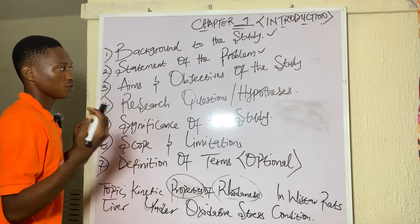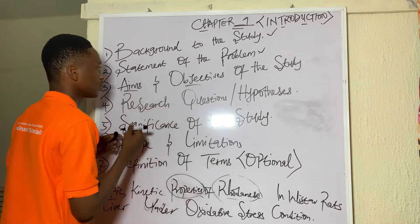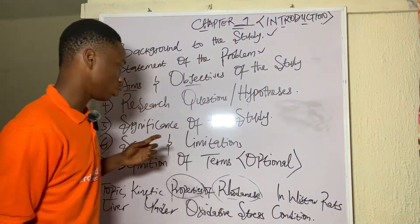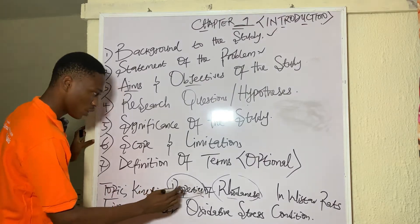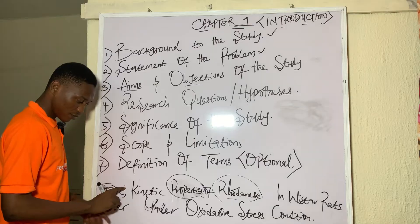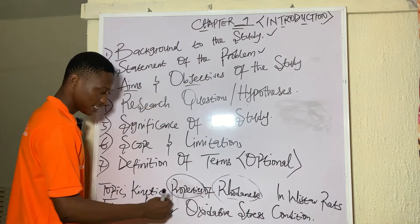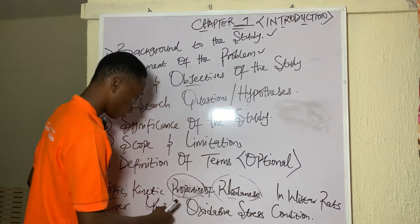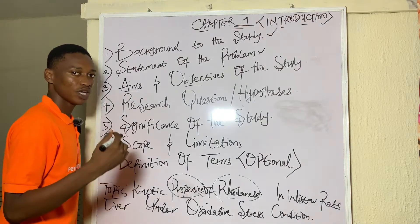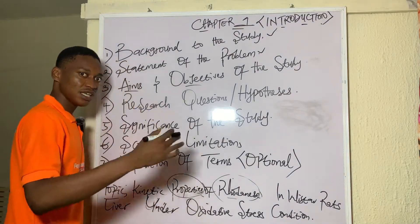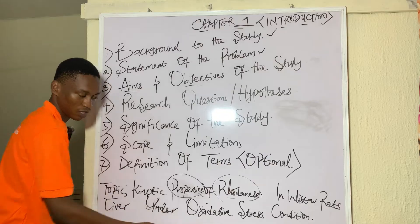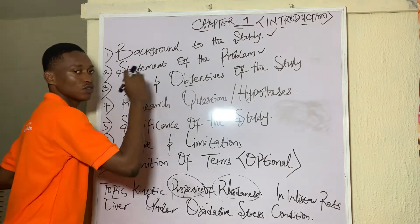Now the third section: aims and objectives of the study. The aim is more like looking at the big picture. For our topic — kinetic properties of rhodanese in Wistar rats under oxidative stress condition — the aim would be 'to investigate the kinetic properties of rhodanese in Wistar rat liver under oxidative stress condition.' You simply add 'to investigate' because that's the big picture. If your topic is GC-MS analysis of the ethyl acetate extract of onion skin, the aim would be 'to investigate the GC-MS analysis of the ethyl acetate extract of onion skin.'